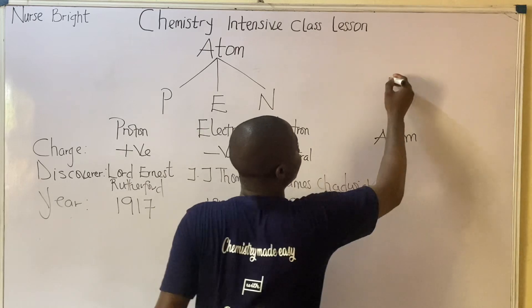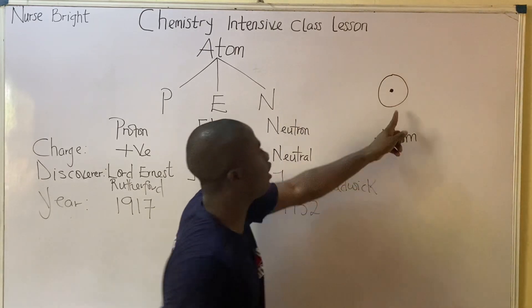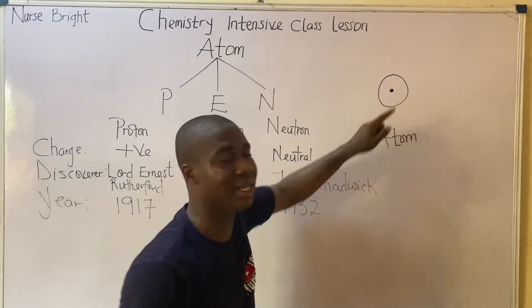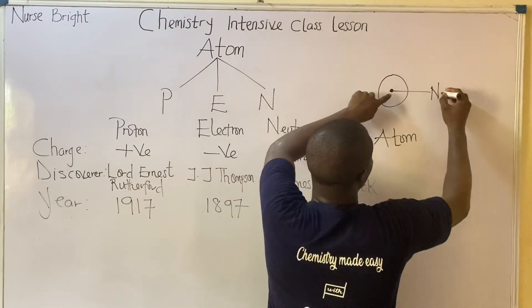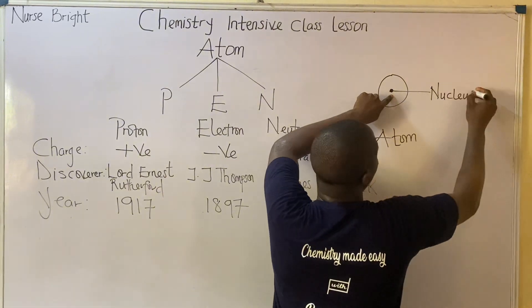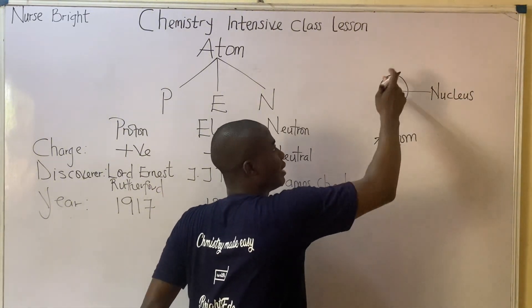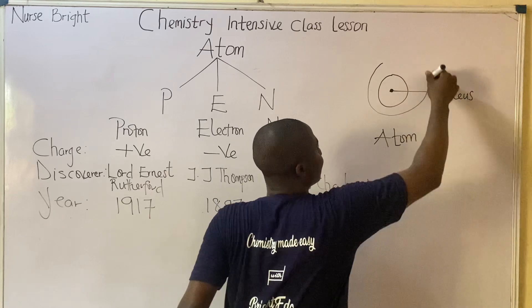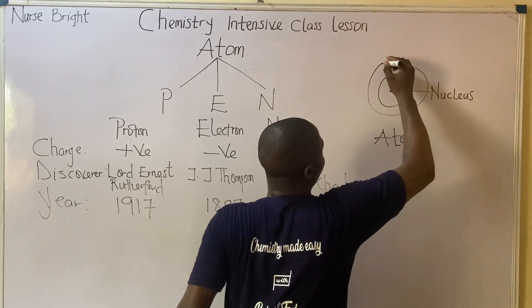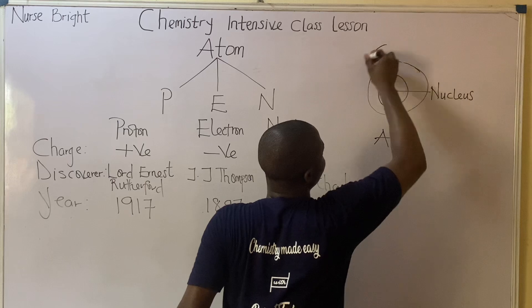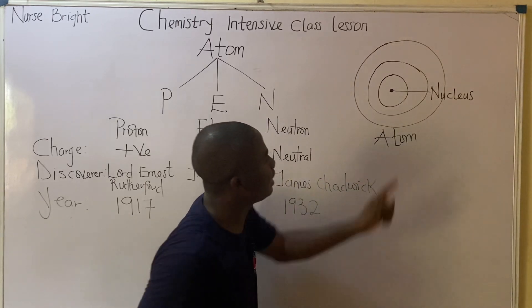An atom is made up of a centrally located nucleus — this thing at the center is simply called the nucleus — whereby we have orbits, the circular paths around it. Let me draw one more and start labeling.